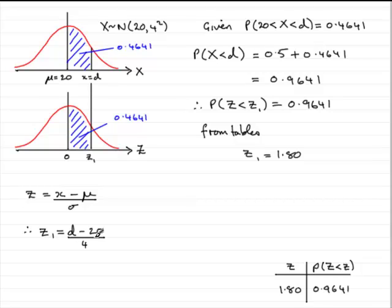Now that I know z1, I can say that z1 equals 1.80 equals d minus 20 over 4. And if I now multiply both sides by 4 and add 20, I can get d. And it turns out that d is equal to 27.20.